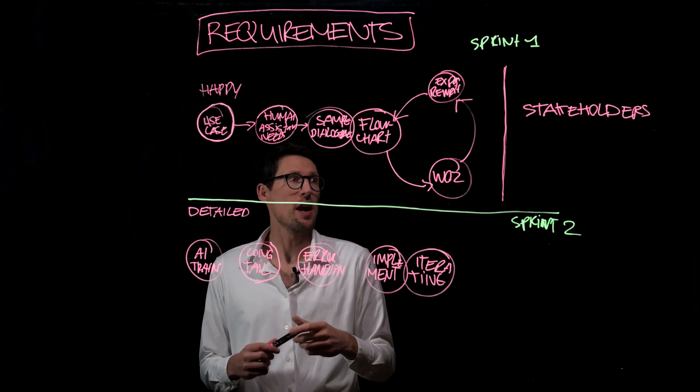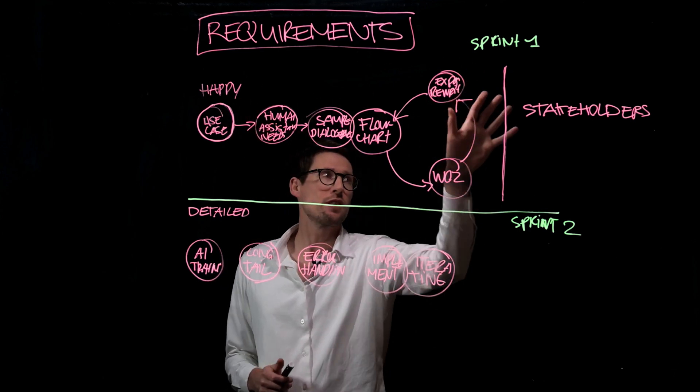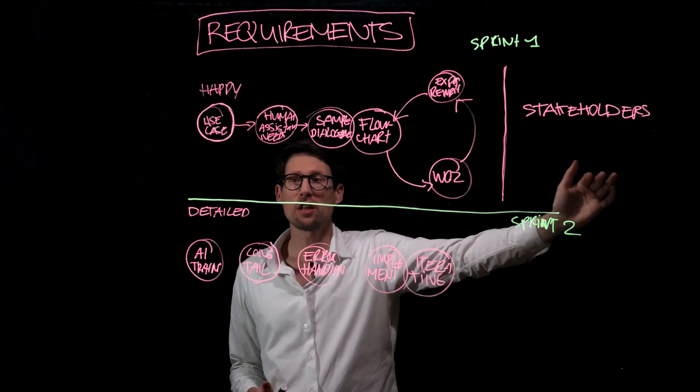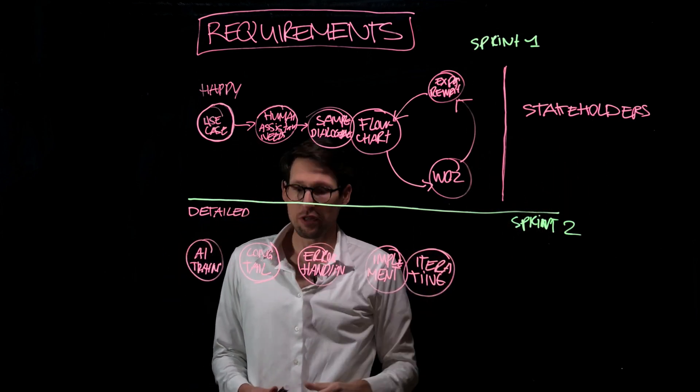And these are really all the steps. So we have two sprints, sprint one for happy conversation design, we get the sign off from the stakeholders, and then we go to detailed conversation design in sprint two.